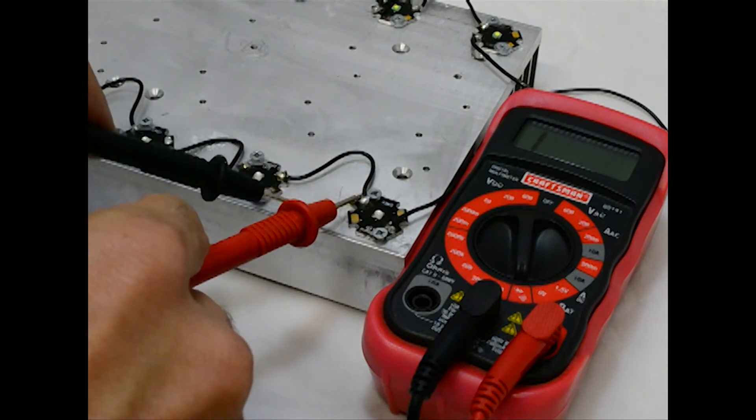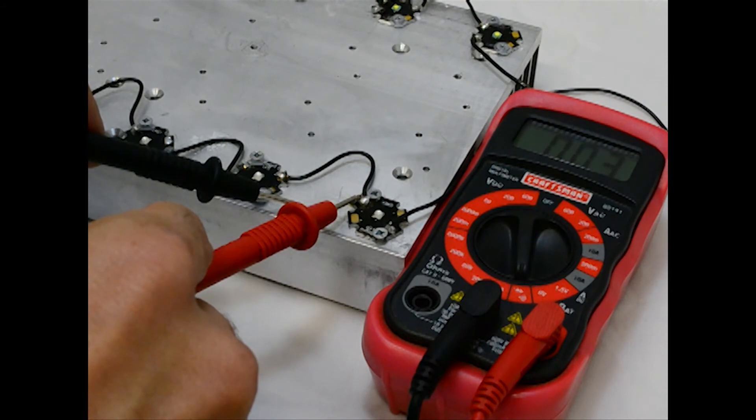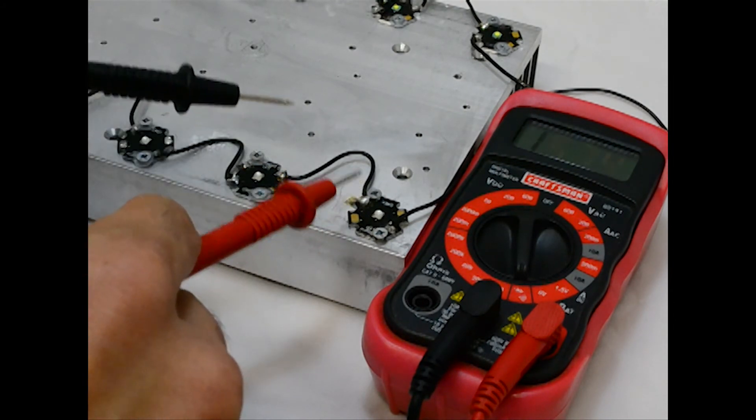Put the other one on the heat sink. If you hear a beep or your meter reads zero, that means you have continuity and you want to fix that joint.